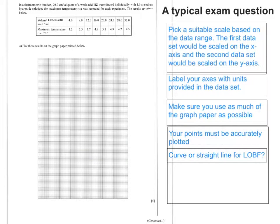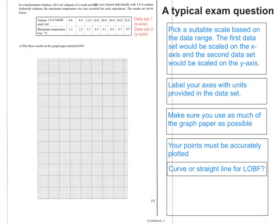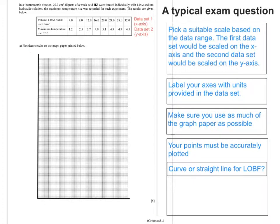A typical exam question will have two sets of data. Pick a suitable scale based on the data range that you're given, and your first data set would be on the x-axis, and the second data set would be on the y-axis. Use as much of the graph paper as possible. I've drawn my axes using a straight line. Now I have to decide on my scale. I'll start with the x-axis, which is horizontally on the bottom.